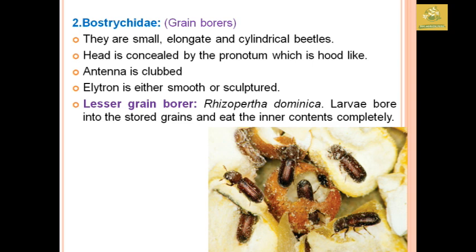The Bostrichidae family comprises grain borers. They are small, elongate, and cylindrical beetles. The head is concealed by the pronotum in a hood-like structure, and antennae are clubbed. The elytra are either smooth or sculptured. An example is the lesser grain borer, Rhyzopertha dominica, where larvae bore into stored grains and eat the inner content completely.